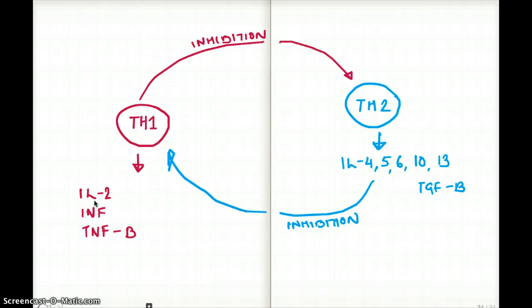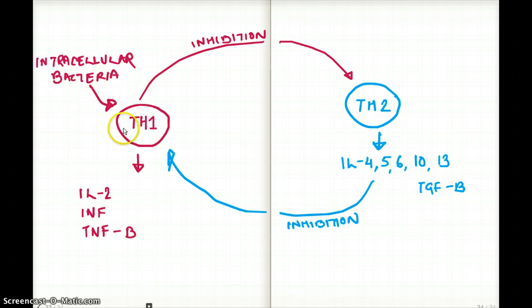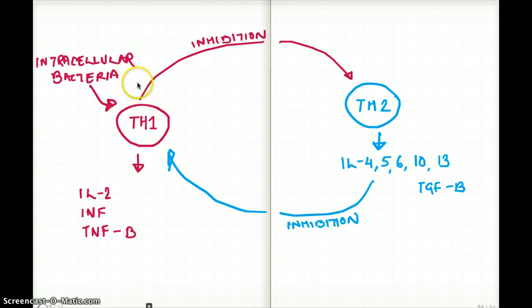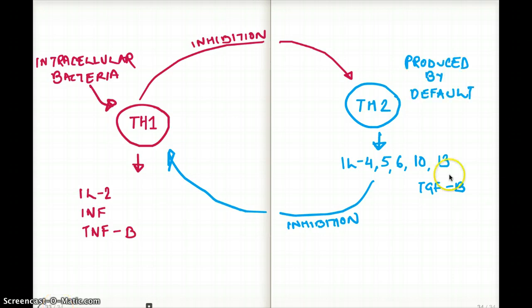T helper 1 is being made in the presence of intracellular bacteria — intracellular bacteria really stimulates T helper 1. For T helper 2, it gets stimulated in the absence of T helper 1. When T helper 1 is not being proliferated by intracellular bacteria, that's when by default T helper 2 is being made, because it's getting ready to protect the blood.